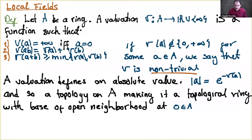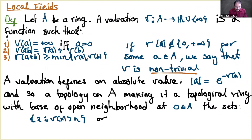An important property: whenever I have a ring with a valuation, it is an integral domain. Since it is a domain, we can consider the fraction field. Once we have the fraction field, we can extend the valuation to it: v(a/b) = v(a) − v(b), exactly as we do with p-adic numbers.